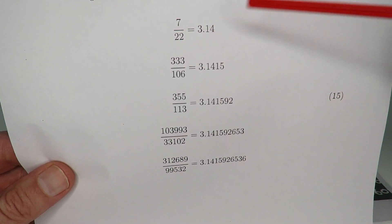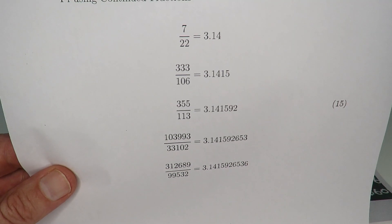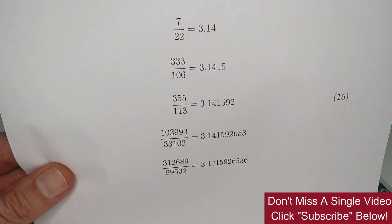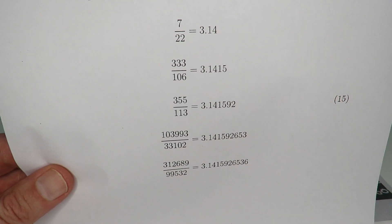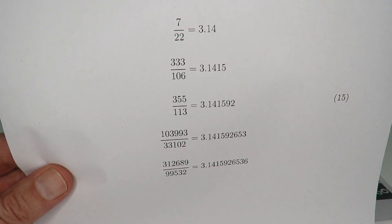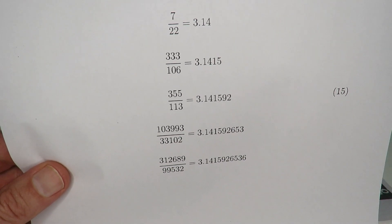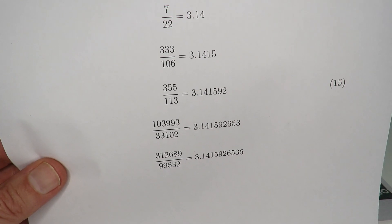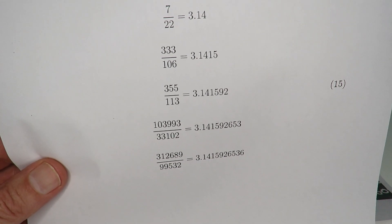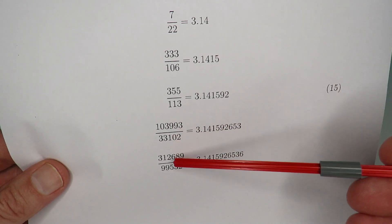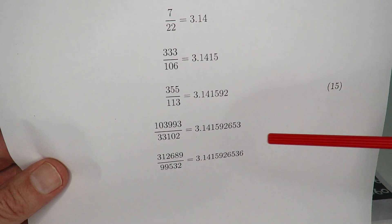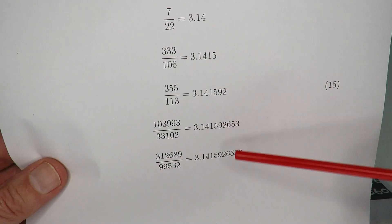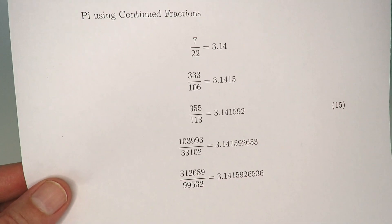So for example here we've got 7 over 22 that gives us Pi to two decimal places: 3.14. If we go to a larger fraction, 333 over 106, we get 3.1415 which is accurate to four decimal places. Similarly, if we go to a larger fraction, 355 over 113 gives us six decimal places. You can carry on this technique and find other fractions that give us more and more accuracy. This one here is 9 and that one's 10.